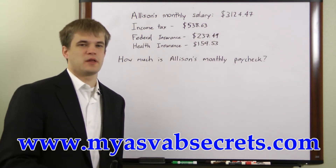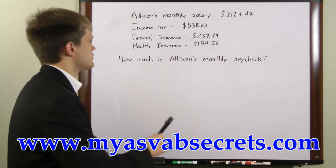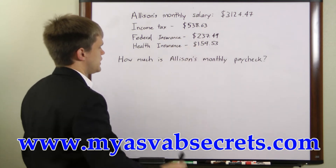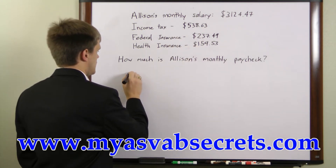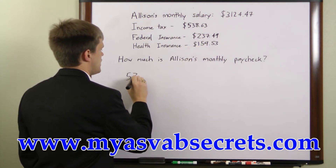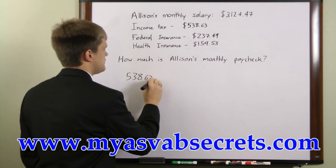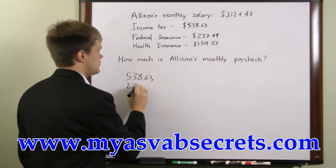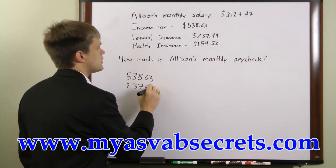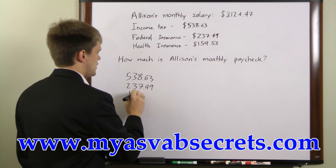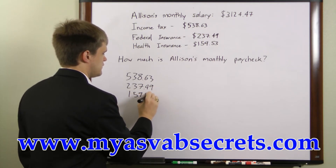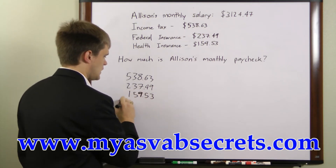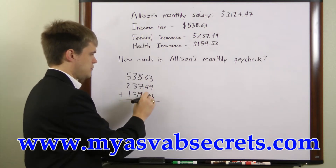So we're going to go with the second method. To do this, we're going to sum up all three deductions: $538.63, $237.49, and $159.53.